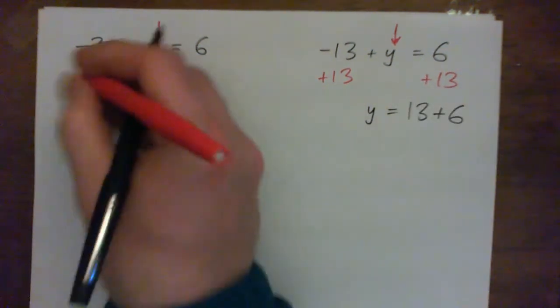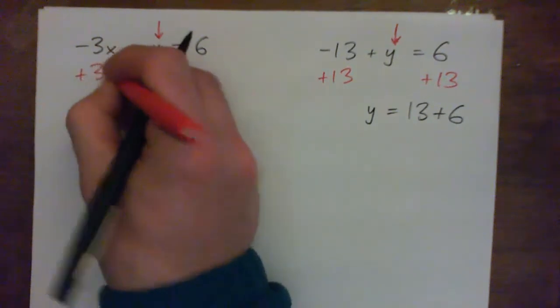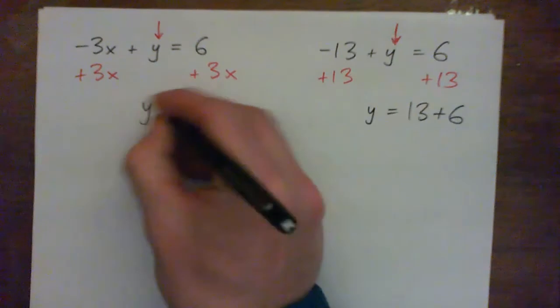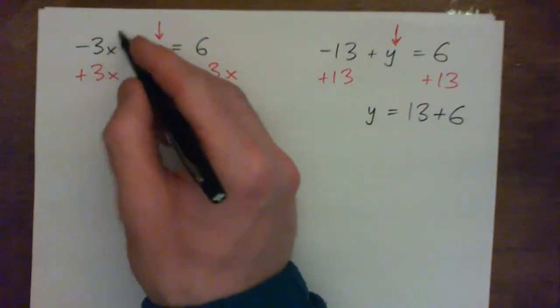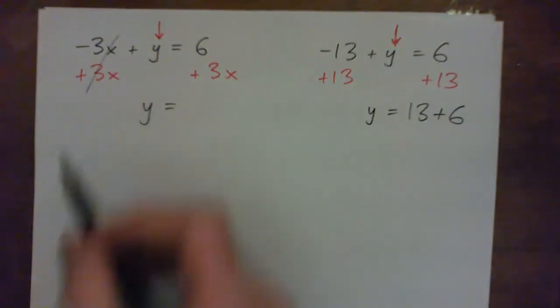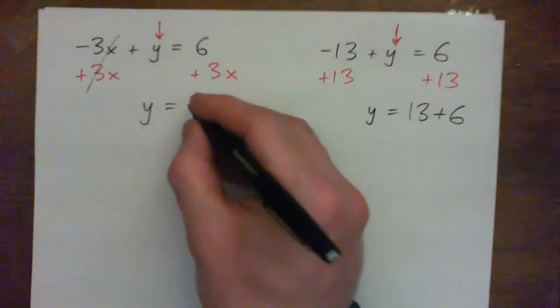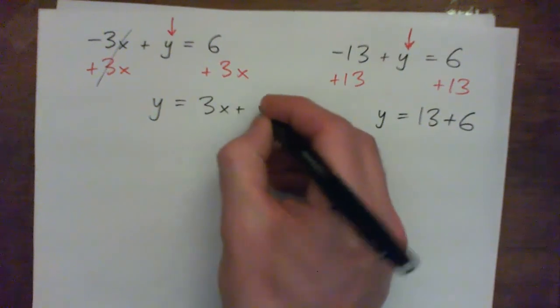So that's all we're doing here. We're just going to add the 3x to both sides and we just get y because negative 3x plus 3x makes zero. That will make that go away. Get that problem out of your life. Now you have y equals 6 plus 3x or 3x plus 6. Same thing right?